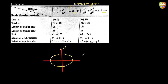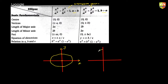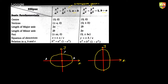For the first type, the major axis is along the x-axis and the minor axis is along the y-axis. For the second type, the major axis is along the y-axis and the minor axis is along the x-axis. The vertices are labeled a, a', b, b' accordingly.